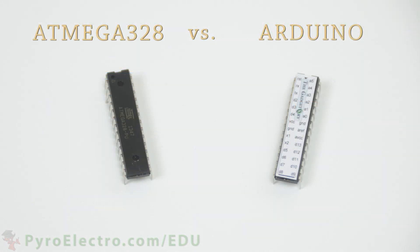So let's get a quick taste of the differences between using Arduino's platform code and regular AVR GCC code. We'll use the same program from lesson 4 where we blinked an LED on and off in the timers lesson.